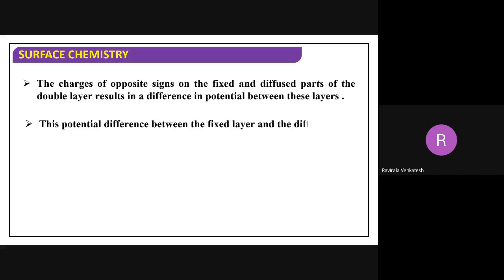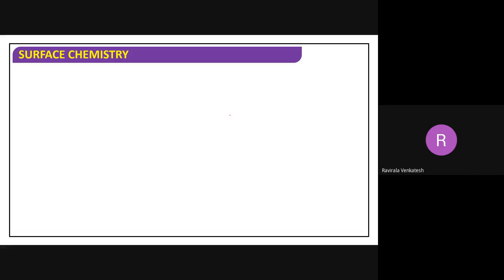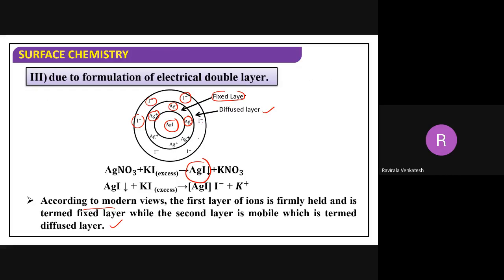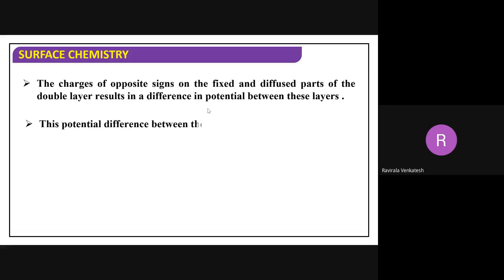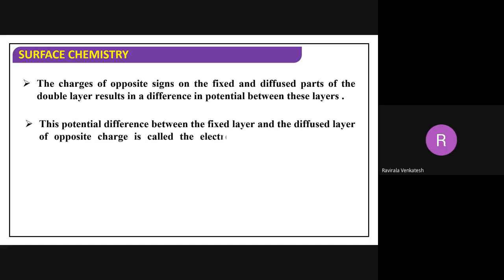The charges of opposite signs on the fixed and diffused parts of the double layer result in a potential difference between these two layers. This potential difference between the fixed layer and the mobile (diffused) layer is called the zeta potential. The zeta potential is a very important concept.